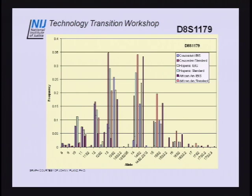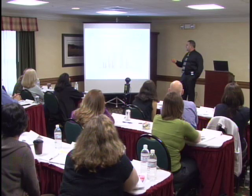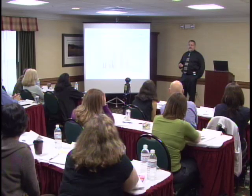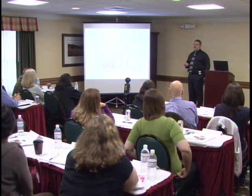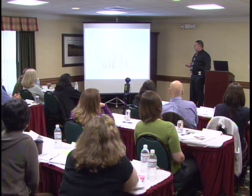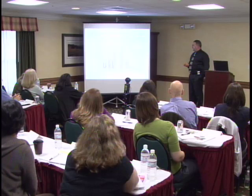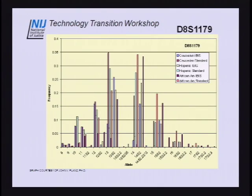I'm going to apologize for these graphs — they're extremely busy. Normally I would have these blown up the size of this room so you could actually see the differences. What we have here are pairwise comparisons between the different population groups for D8. We looked at the IBIS method, where we actually captured the SNP information, and then the standard typing method, where we ignored the SNPs. There are definite patterns, and these patterns seem to be somewhat consistent even among the loci.